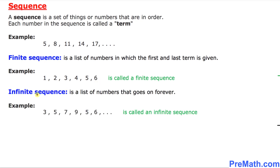The second type is called an infinite sequence. This is a list of numbers that goes on forever — we don't see any last term, which means it goes on and on. We know the first term, second, third, but it simply goes on and on, so we call it an infinite sequence.